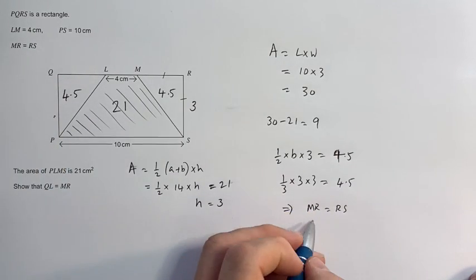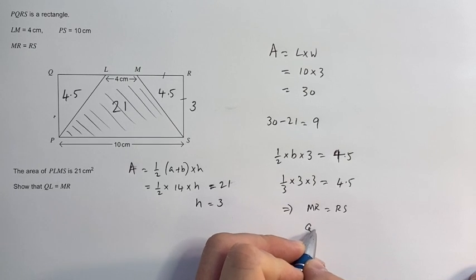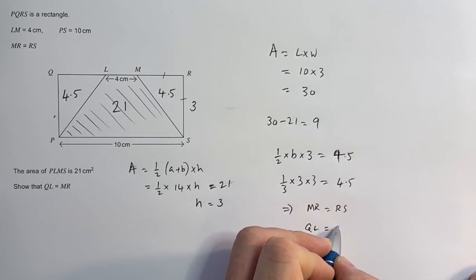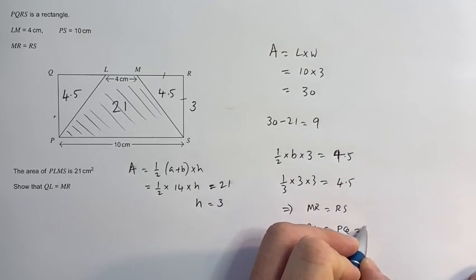if I go to this side, which is the one that we're actually looking at, the QL must equal 3, and the PQ must equal 3.